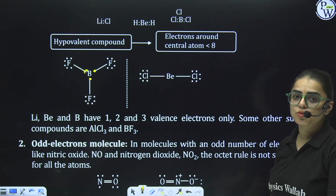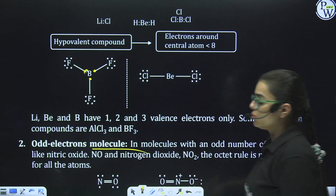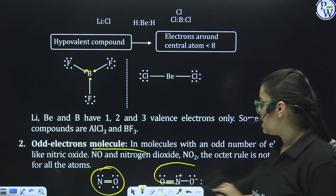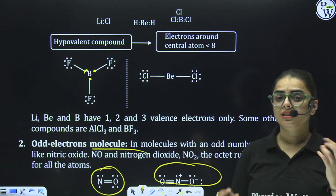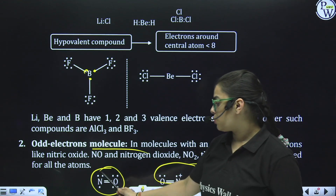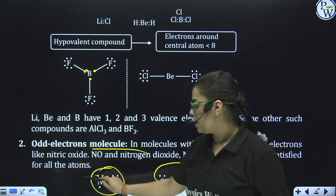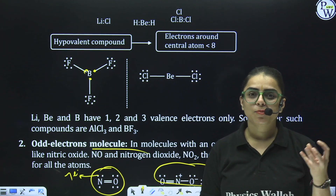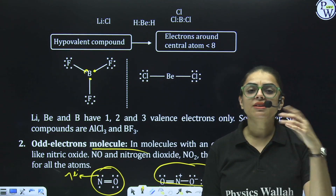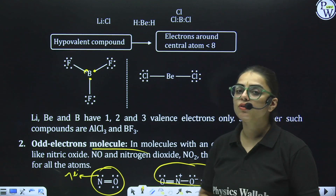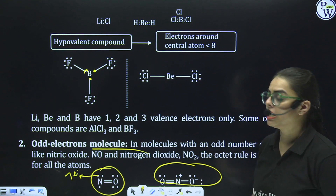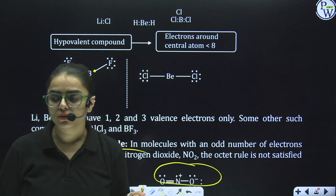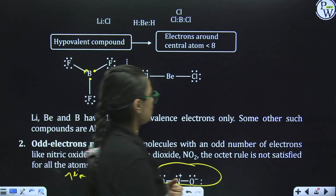The next exception is odd-electron molecules. In NO and NO₂, when we count the electrons for the central nitrogen atom, it comes to 7 electrons — an odd number. Since octet and duplet are even numbers, an odd number of electrons means the octet is not complete, so this is again an exception seen in NO and NO₂.